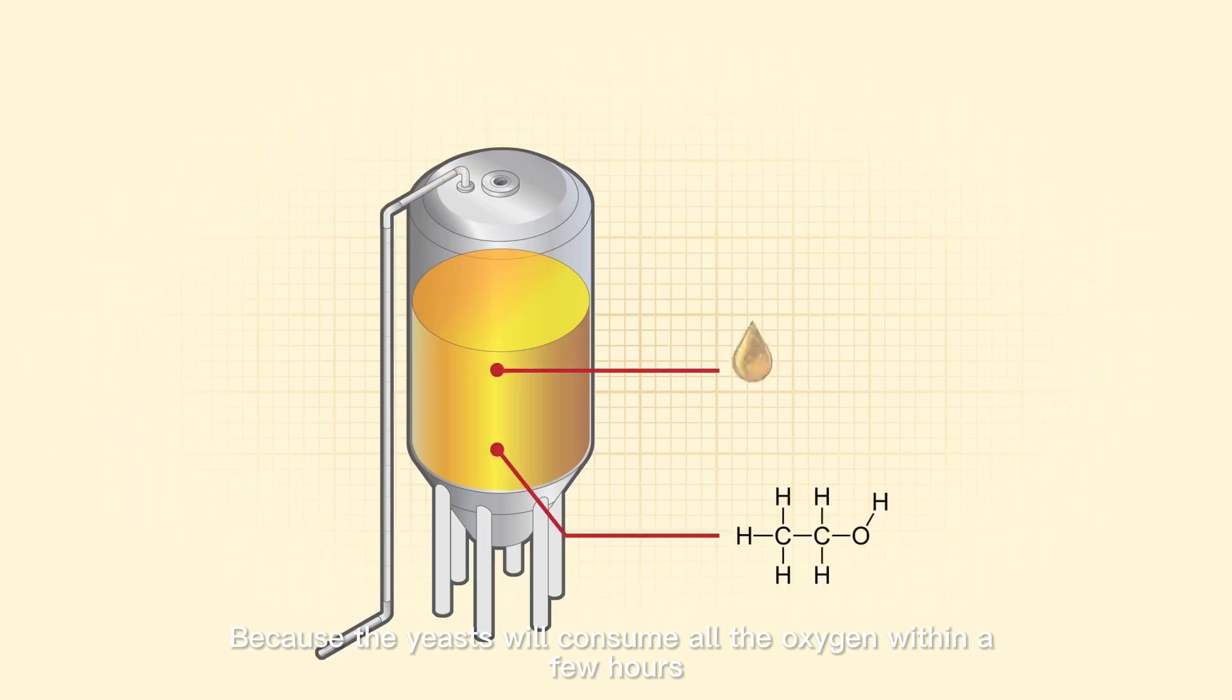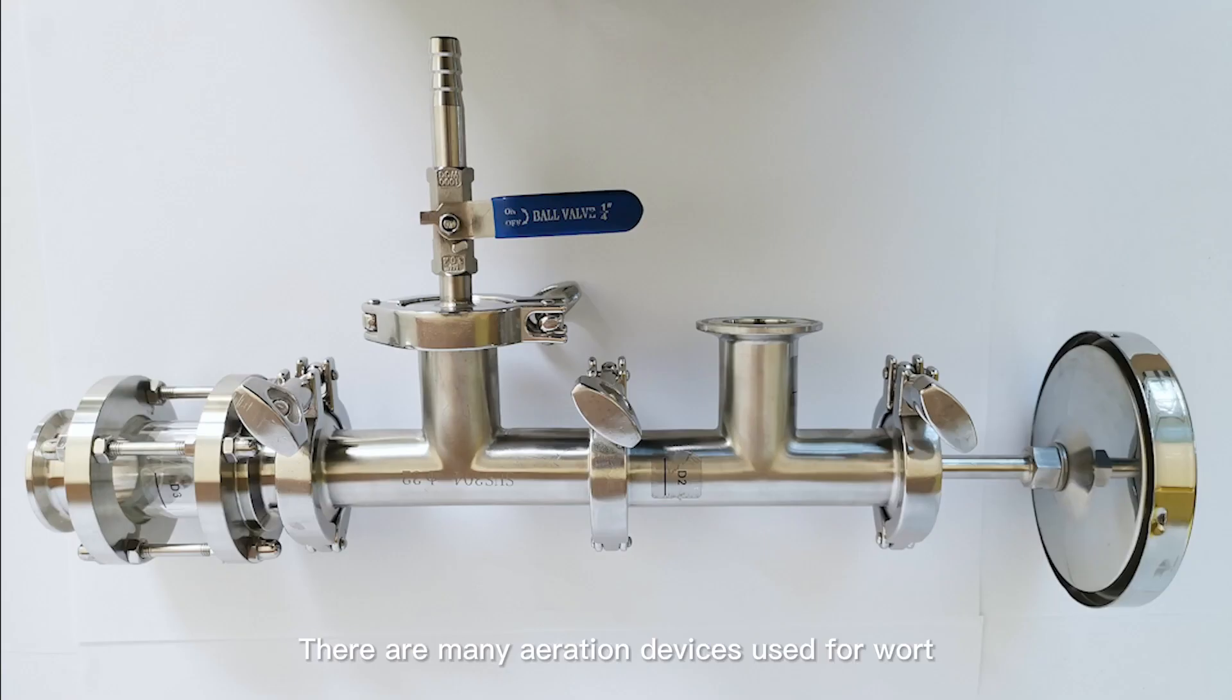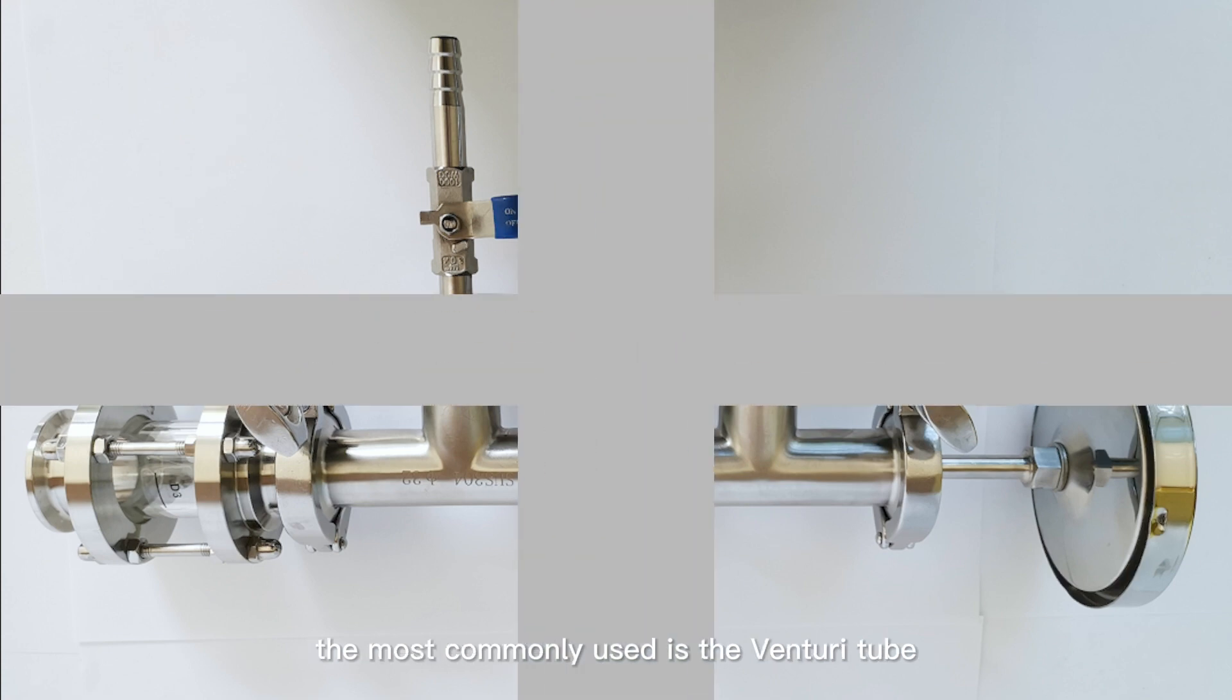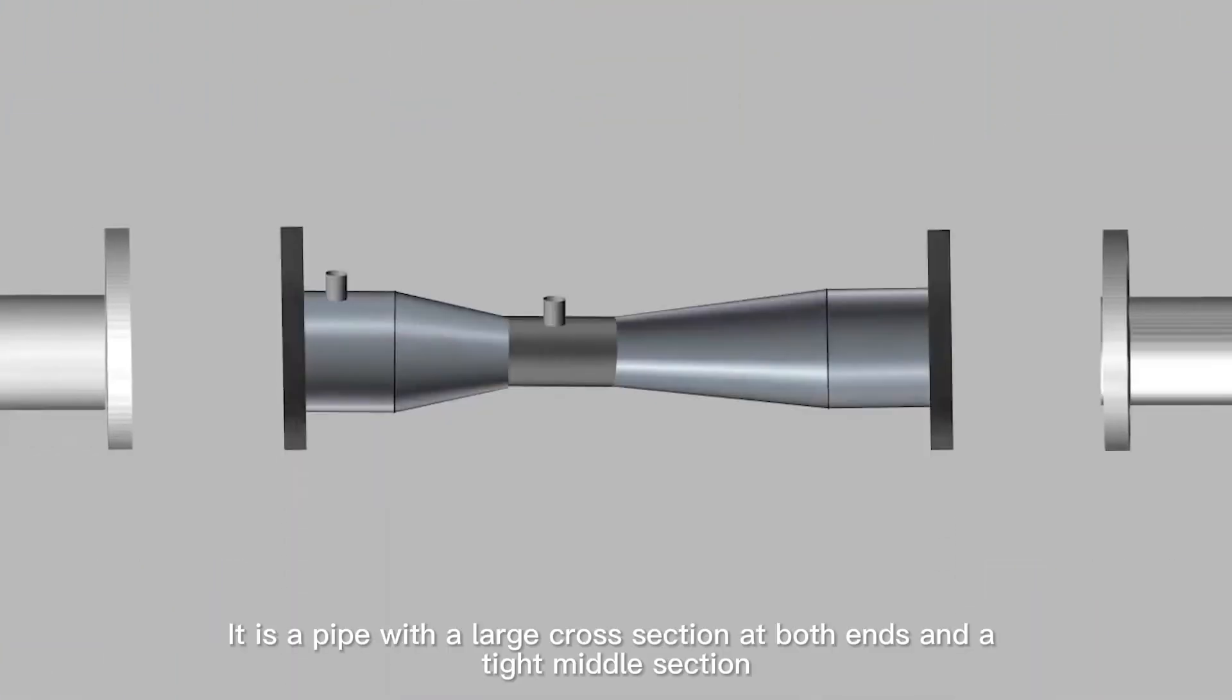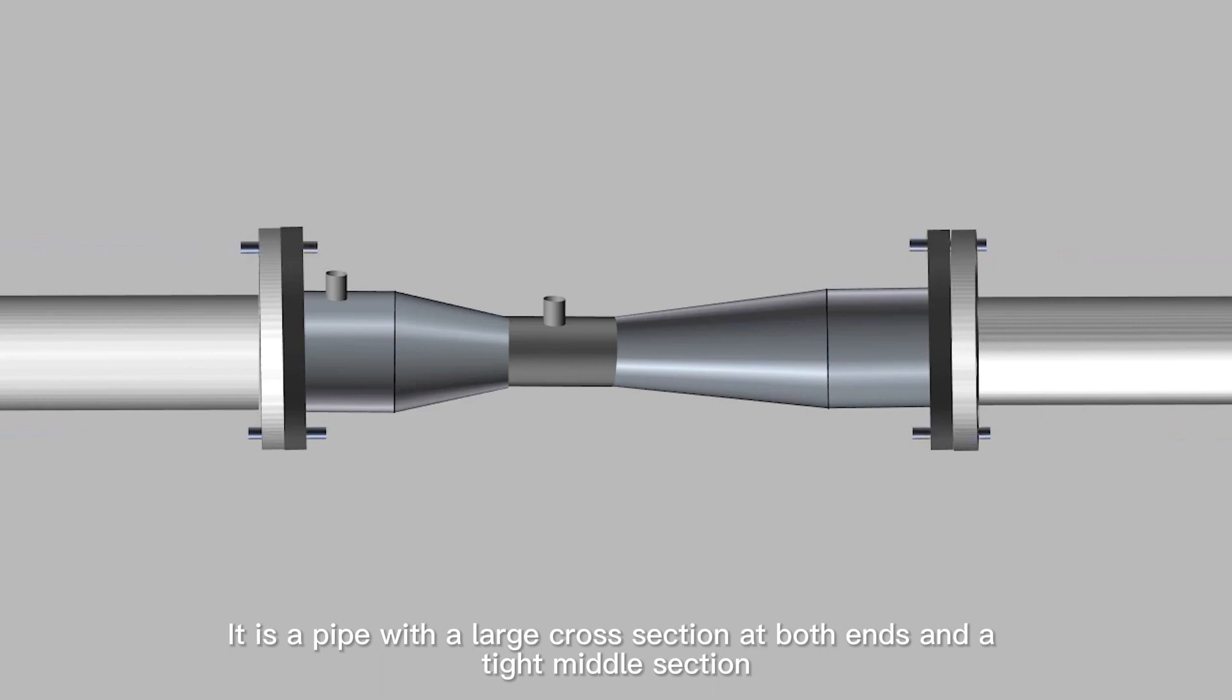There are many aeration devices used for wort. The most commonly used is the venturi tube. It is a pipe with large sections at both ends and a compressed middle section.